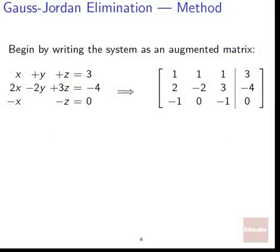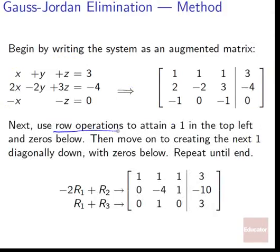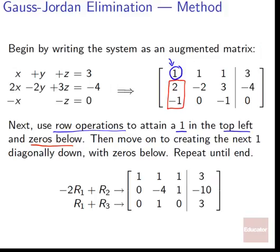The very first step of Gauss-Jordan elimination is to write your linear system in augmented matrix form. Next, use row operations to get a 1 in the top left, then zeros below it. Once you have a 1 in the top left and zeros below, move on to creating the next 1 diagonally down and create zeros below that. Keep repeating until you've made it all the way down the diagonal.